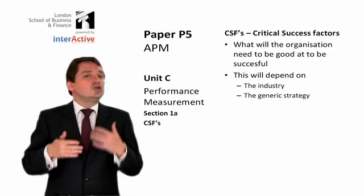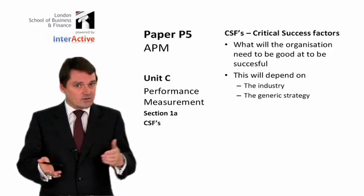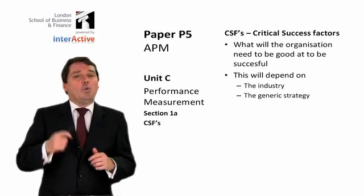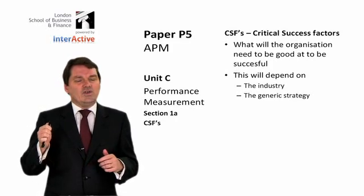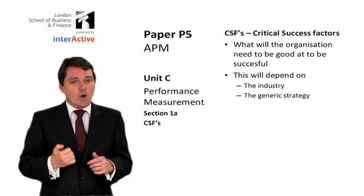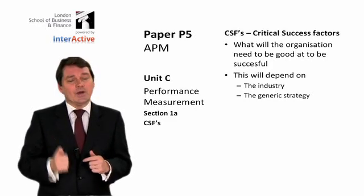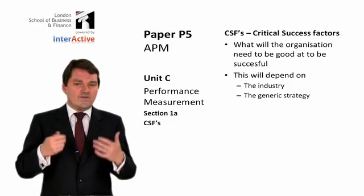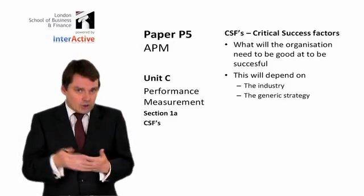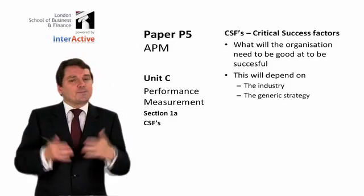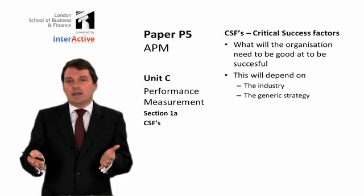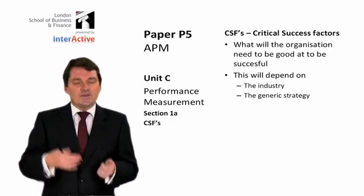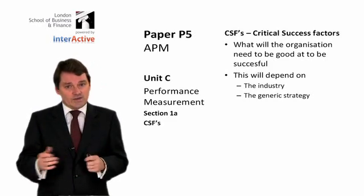You should remember generic strategies from paper P3. Taking the example of a car manufacturer, what do you need to be good at if you are manufacturing luxury cars might be very different to what you have to be good at if you manufacture a fairly basic mass production vehicle. Even though they're both car manufacturers, there'll be certain things that they will do the same, but there'll be a lot of things that they do differently.